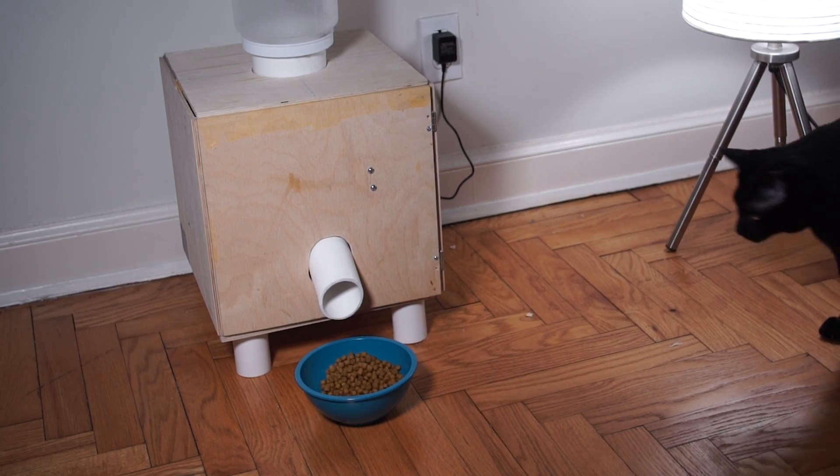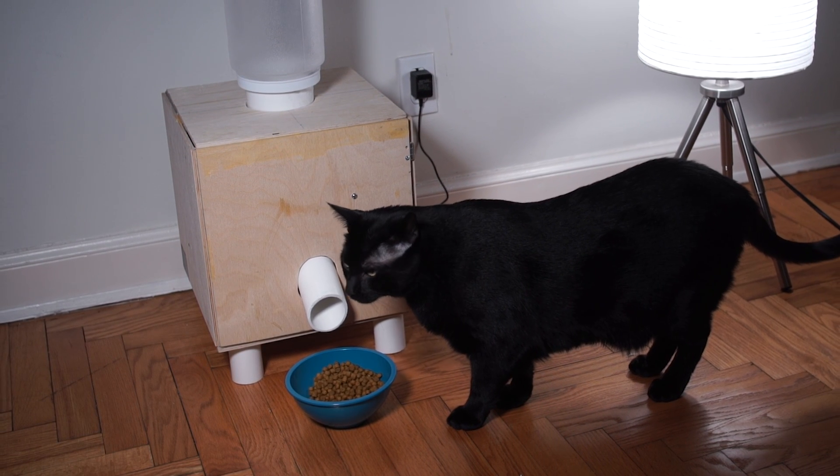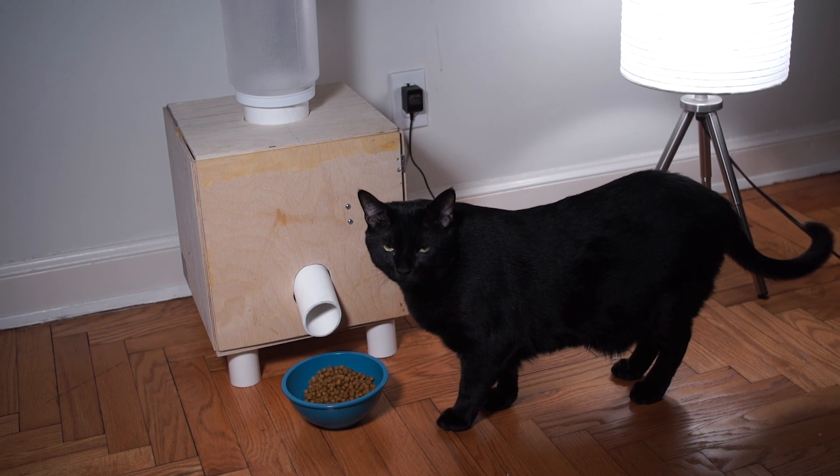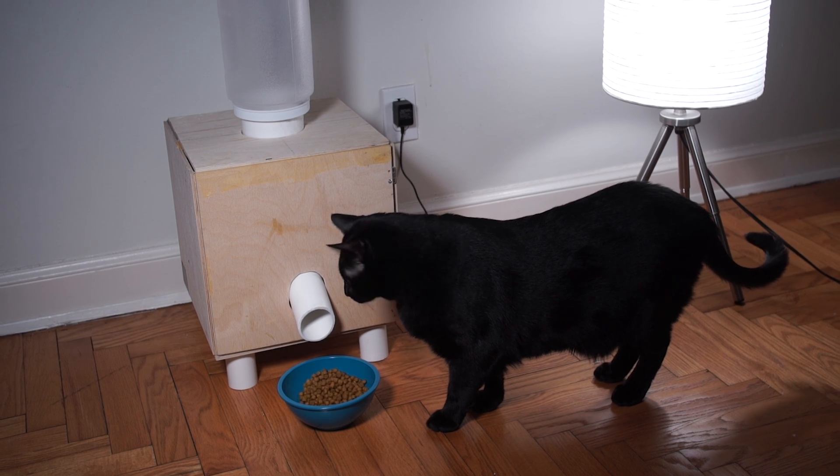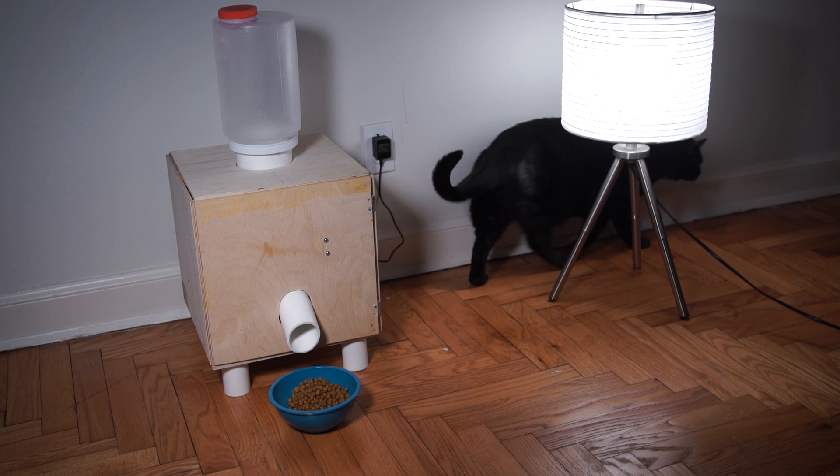Next I created four 3 inch legs using leftover PVC and attached them to the bottom at each corner. This will ensure the spout is high enough off the ground and also is a preventative for spills. I'm probably going to give it a wood stain and glossy finish as a final touch. And there you have it! Let's see it in action!